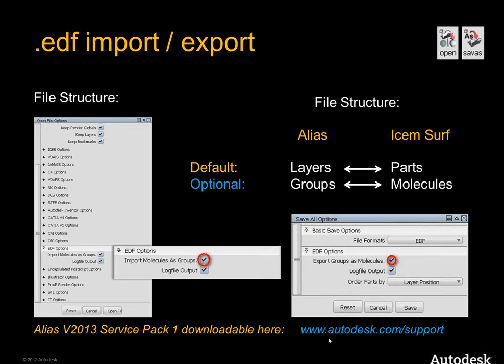One important thing: if you plan to use this EDF import/export in your daily work, we already have service pack number one ready for download. I strongly recommend downloading and installing this. Alias 2013 has been available since end of March 2012, and the service pack came in July. The website is autodesk.com/support. It's not too big and should take only a couple of minutes.